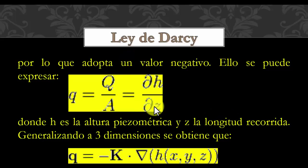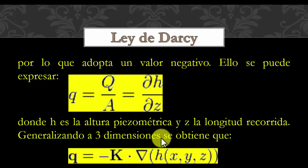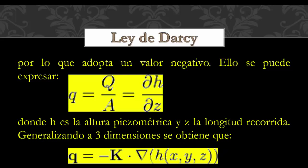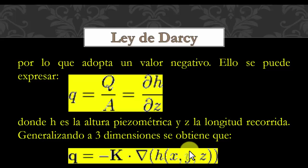Generalizando a tres dimensiones, se obtiene que Q es igual a menos K (la constante en metros por segundo) por el diferencial de la altura piezométrica H en las direcciones X, Y y Z.